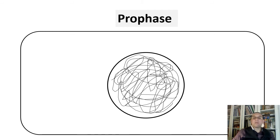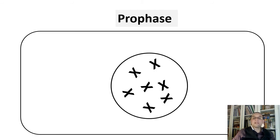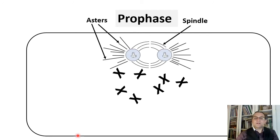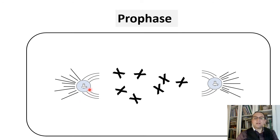In prophase, chromatin coils and becomes chromosomes. The nuclear membrane disappears. Here we see centrioles, asters, and spindle formed — all made of microtubules. Centrioles move to the opposite poles of the cell. The middle of the cell is called the equator, and the opposite sides are called the poles. The spindle, made of microtubules, will eventually help chromosomes move to the opposite sides of the cell.